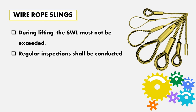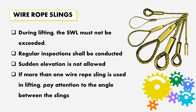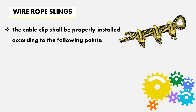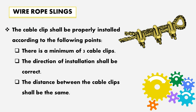Regular inspection shall be conducted. Shock loading is not allowed. If more than one wire rope sling is used in lifting, pay attention to the angle between the slings. The cable clip shall be properly installed: there is a minimum of three cable clips, the direction of installation shall be correct, and the distance between the cable clips shall be the same.